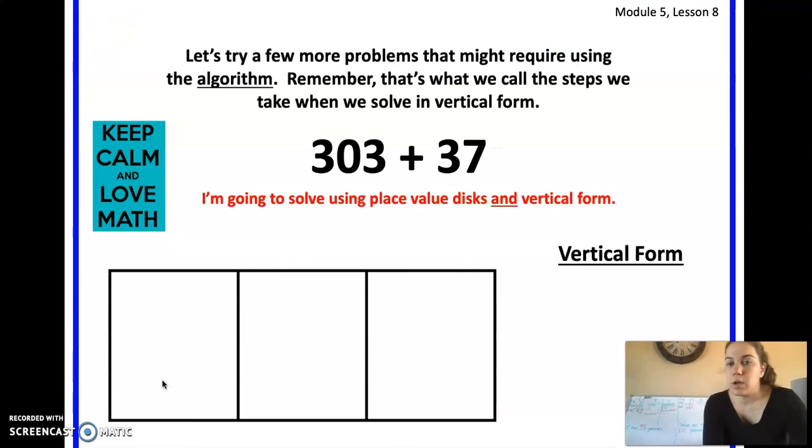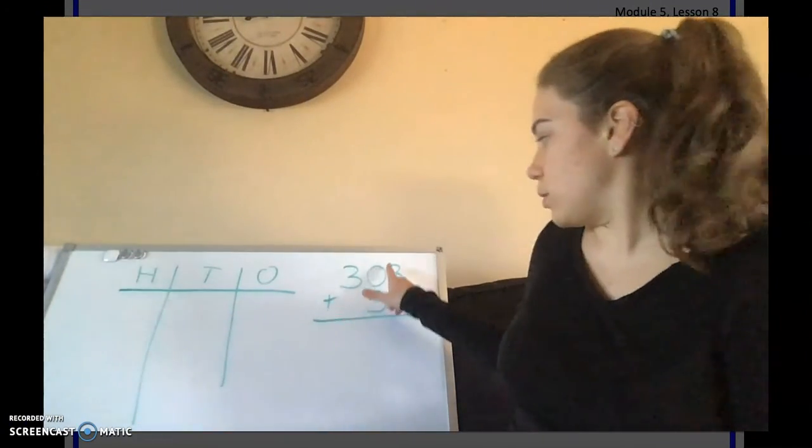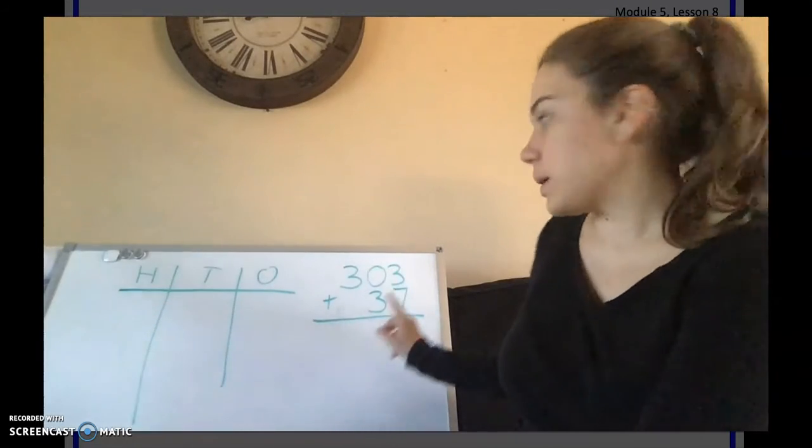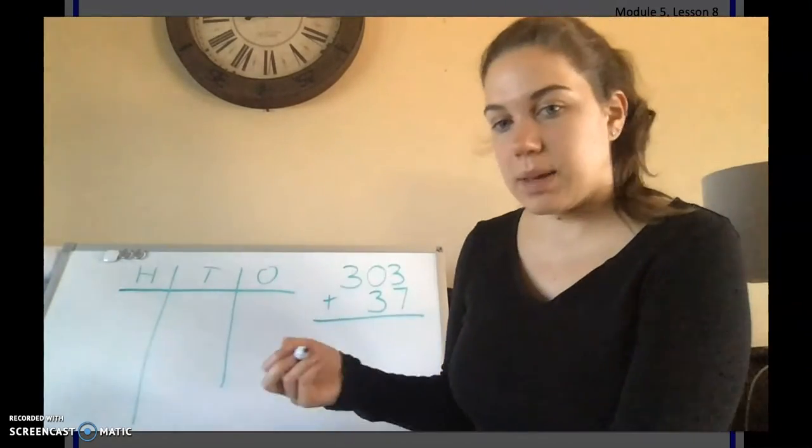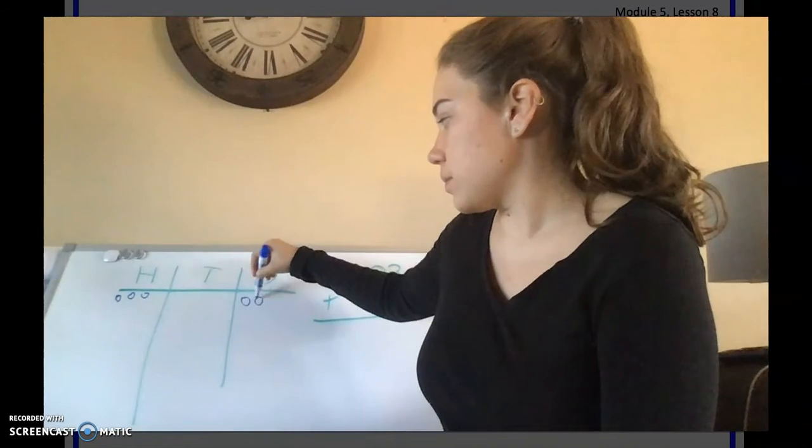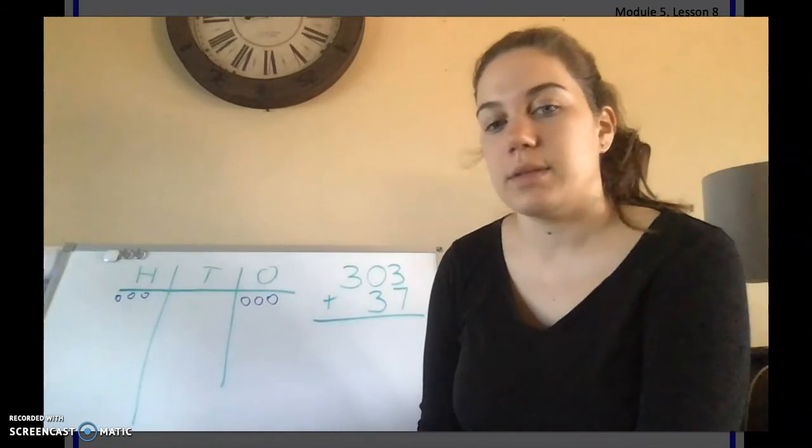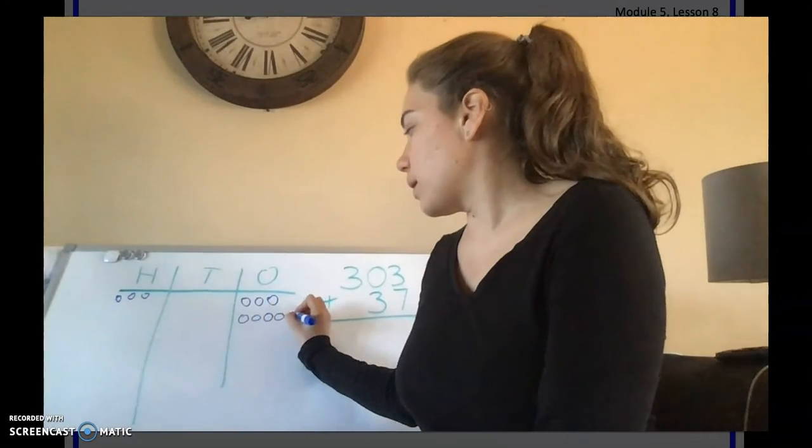Now it says we're going to do 303 plus 37. And we're going to solve that doing it on a place value chart and in vertical form. So if we were together, we would use our place value chart and disks to help us solve this. But since you're home, you could just draw 100 tens and ones place value chart and follow along. So back here, I have my 100 tens and ones place value chart. And I turned my problem into a vertical way. So 303 plus 37. Remember to line up your ones column, your tens column, and if there's a hundreds column, line that up too. So first I'm going to draw my 303 because that's my biggest number and it's on top. So 3 hundreds: 1, 2, 3. There's no tens and 3 ones. So I've done my 303 and now I need to add my 37 to that. So I start in my ones column. I already have the 3 plus 7. So 1, 2, 3, 4, 5, 6, 7.